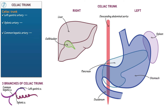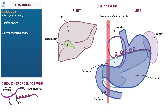Now we'll draw the branches of the celiac trunk. Show that the left gastric artery ascends towards the left side of the stomach and wraps along its superior border, also known as the lesser curvature. Next we'll draw the splenic artery, which is often described as tortuous because it spirals along its length. Show that the splenic artery descends from the celiac trunk, then travels along the superior border of the pancreas to the spleen. Notice that it travels posterior to the stomach.